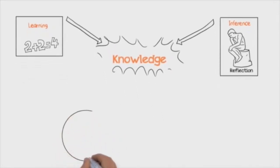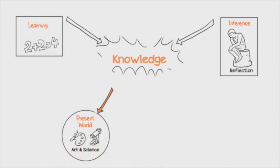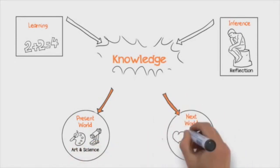Acquired knowledge deals either with the present world, such as the arts and sciences, or the next world, such as knowledge of the heart, God and his attributes.